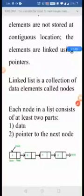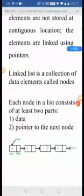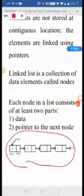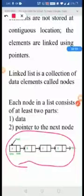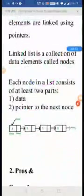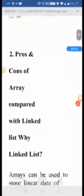Each node in a list consists of two parts: data and a pointer to the next node. We can see the example here — this is the linked list. The first field is the starting field, so it is called the head node. The last field is null because, as it is the last node, the pointer is not pointing to any next node, that is why it is null.